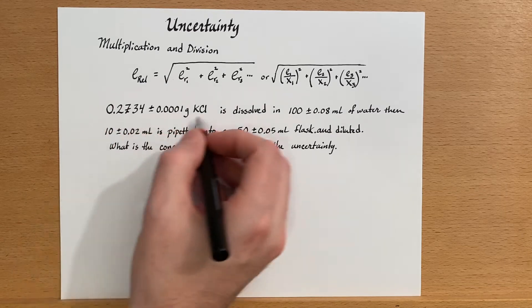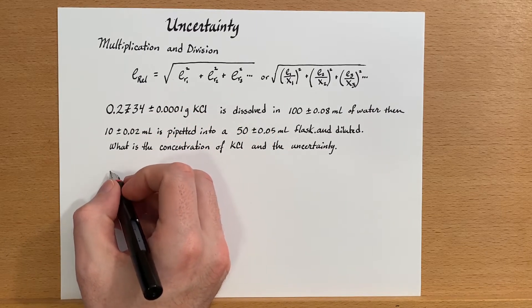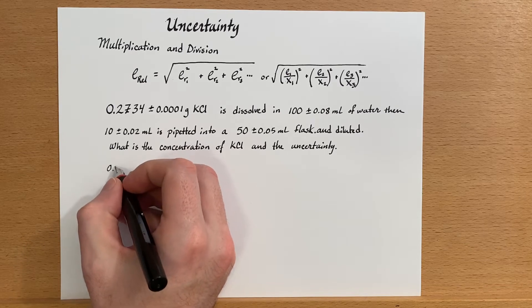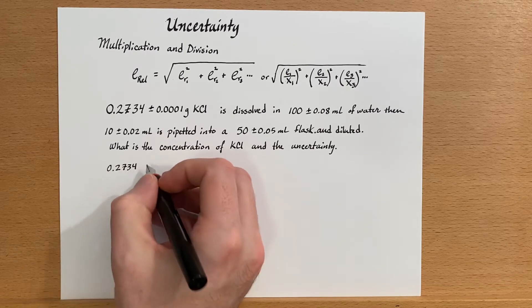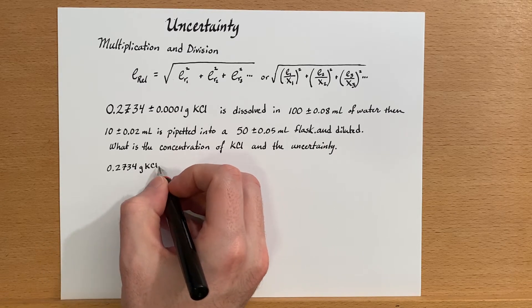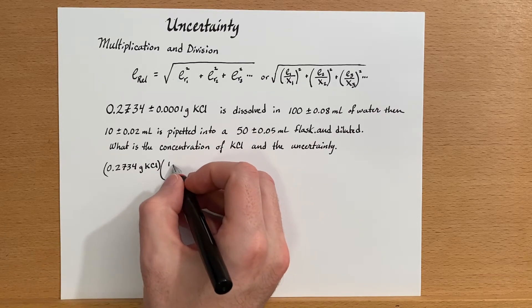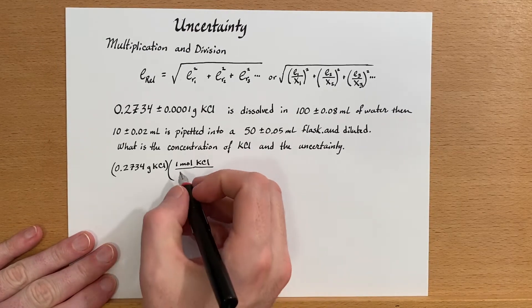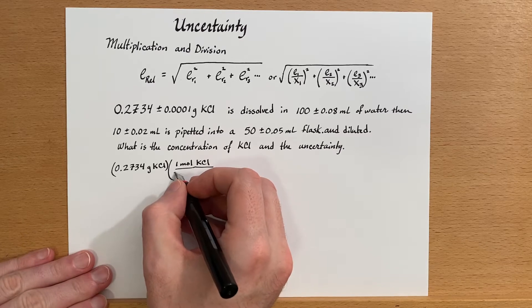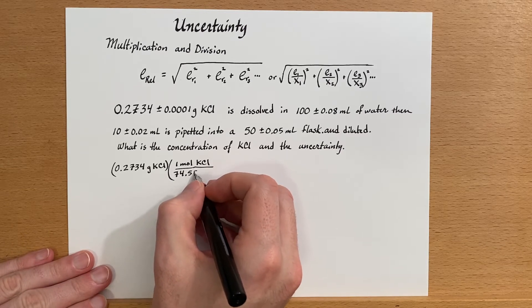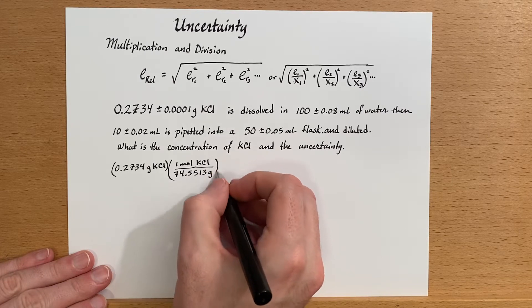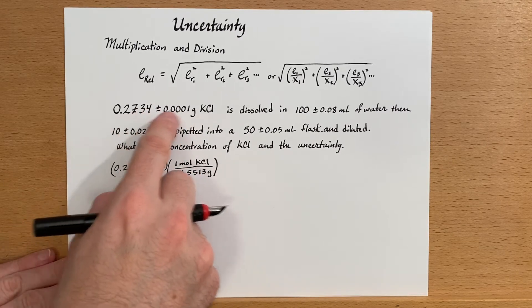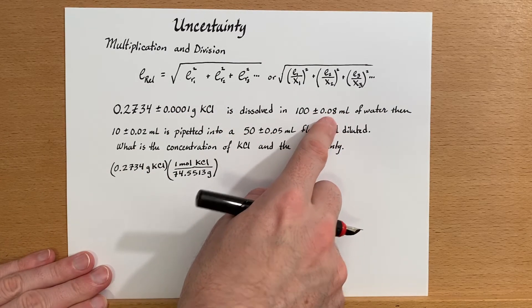And so we start off, we have our measurement in grams. So we're going to use the molar mass of that to convert it into moles, and then we'll divide by the volume. You guys remember how to do calculations like this. Here's some dimensional analysis. Now, this is going to use the molar mass of KCl, which is 74.5513 grams. Now, you may notice that I have uncertainty values associated with the grams of KCl that's been weighed out, the volumetric flask, the pipette, and the second volumetric flask.